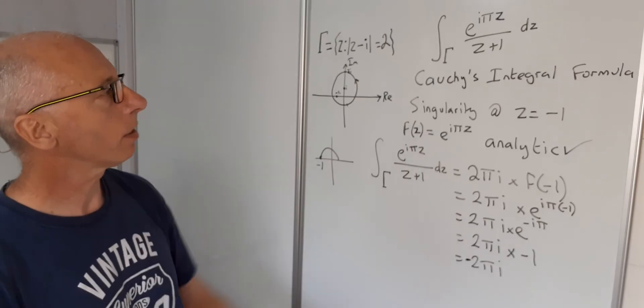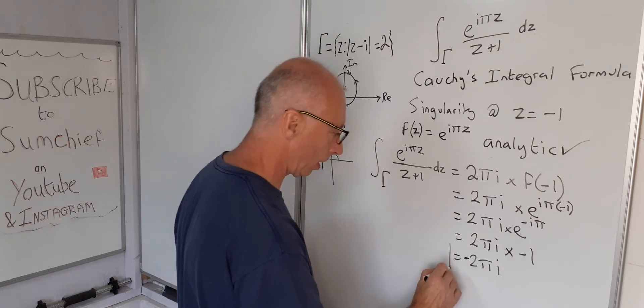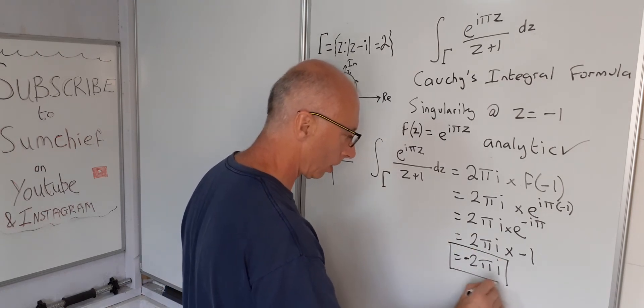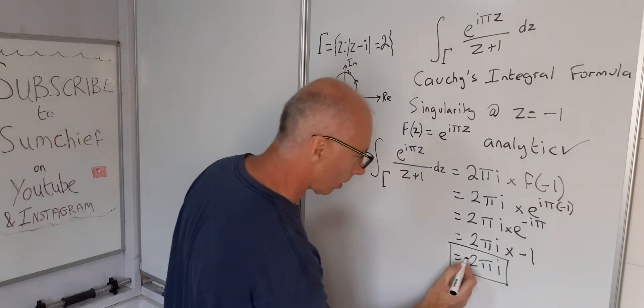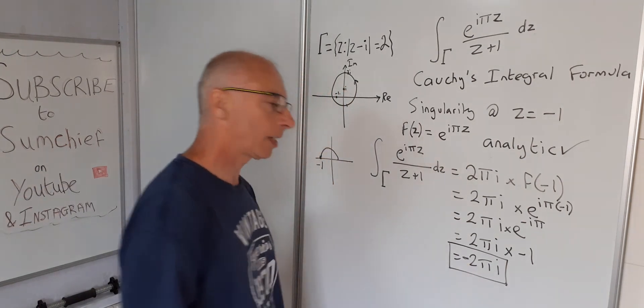So that will give us minus 2 pi I. And that is our answer to this integral here using Cauchy's integral formula following the set conditions that we explained at the beginning. Okay, so that is our answer.